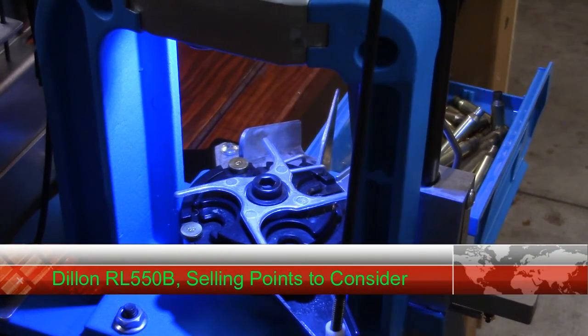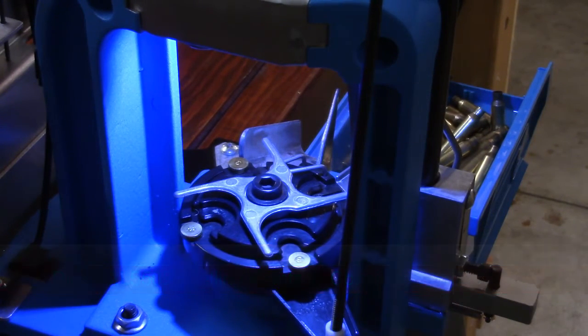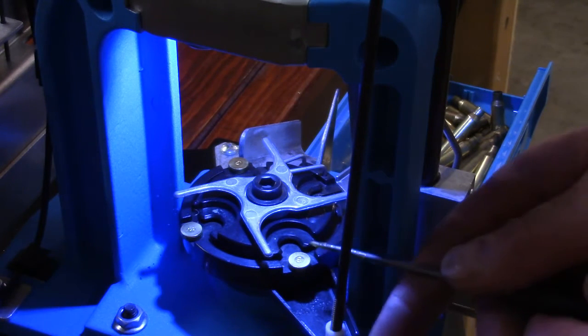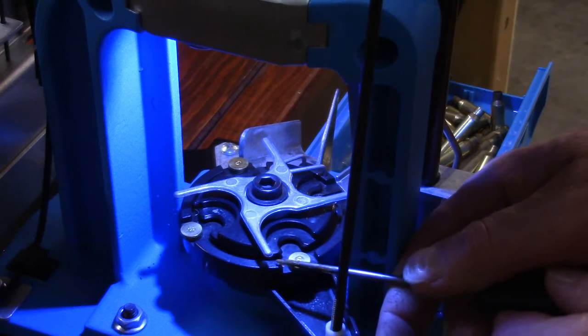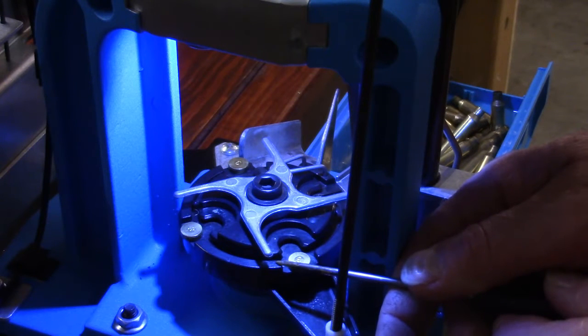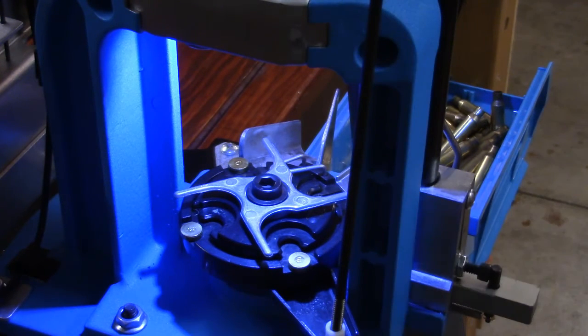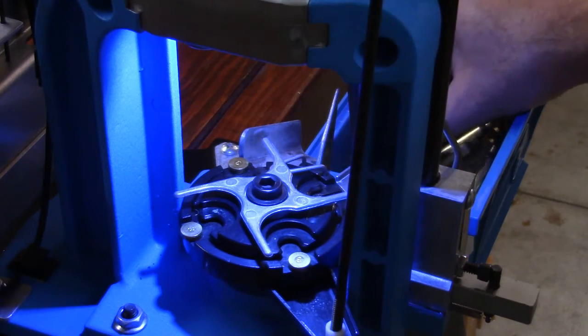The selling points for the Dillon RL 550B for this video are the locator pins and the shell plate platform, primarily this lip that you're looking at. To illustrate both these selling points, what I'd like to do is...